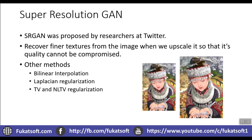First of all, the methods used to be bilinear interpolation, Laplacian regularization, and TV regularization. Now, when we convert a low resolution image to a high resolution image, the number of pixels increases and the dots per inch increases. Therefore, the interpolation of pixels — if we convert two pixels into four pixels — what can be done with the two pixels? The two pixels are interpolated using different methods. The better the method, the better the quality of our output image.